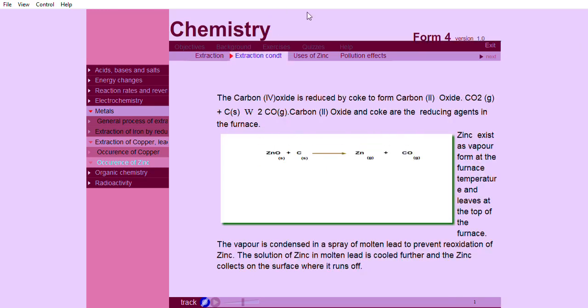The carbon-4 oxide is reduced by coke to form carbon-2 oxide. Carbon-2 oxide and coke are the reducing agents in the furnace. The following equations show how this occurs.